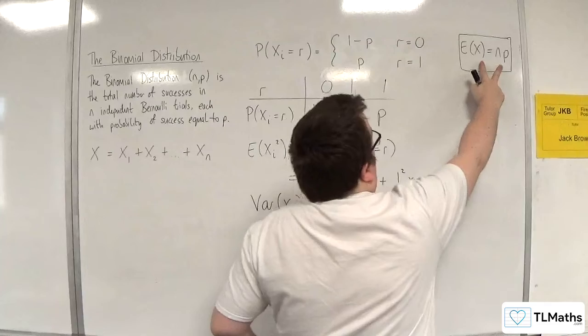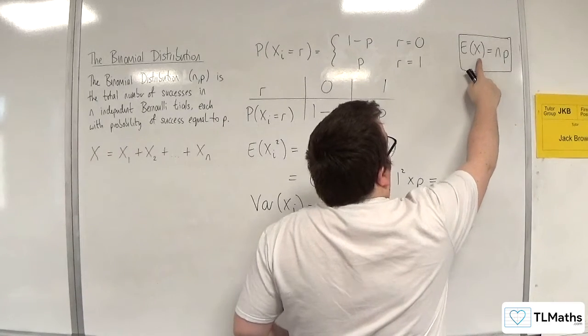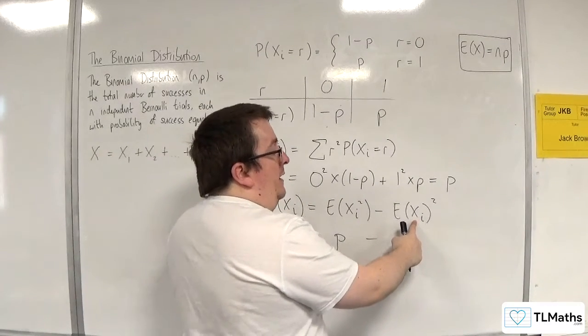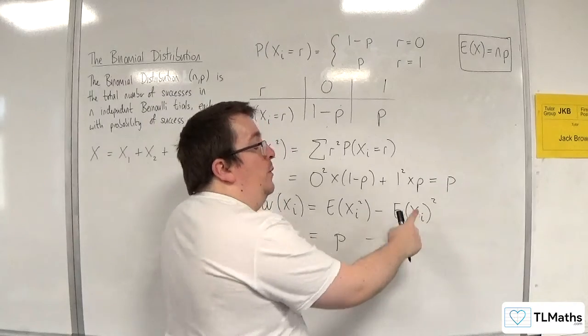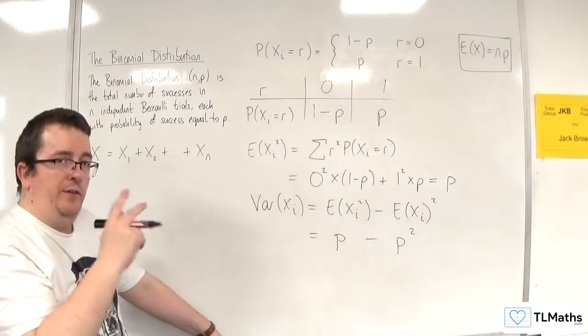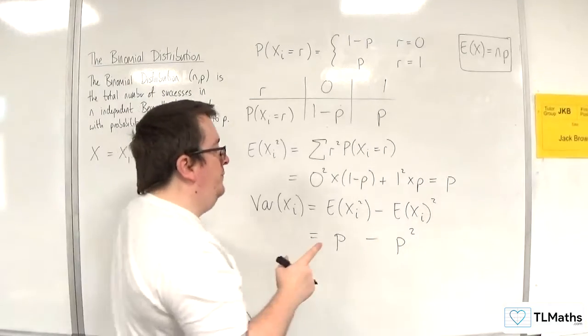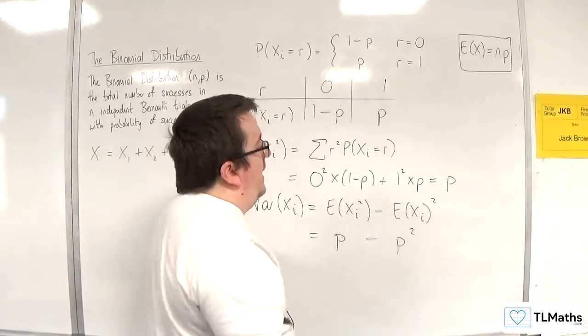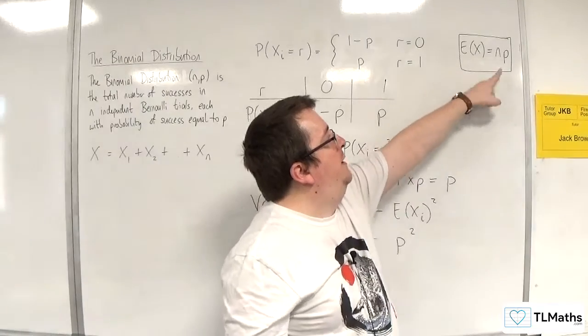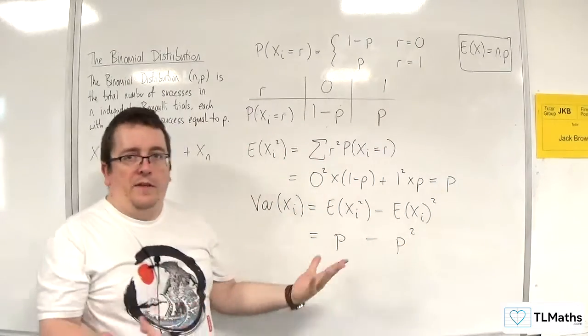Remember, that is E(X) of the binomial distribution, whereas here we're looking at E(Xi), which is the expected value of your Bernoulli trial. They are different. Or you could think of it as the Bernoulli trial when n is 1. When n is 1, you just get p, so that works out as well.